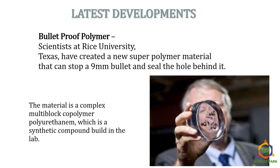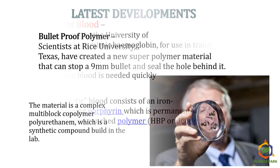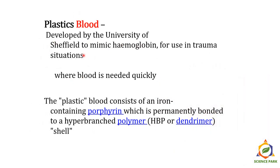Now let's see some latest developments in polymer and plastic research. As bulletproof polymers, scientists at Rice University in Texas have created a new super polymer material that can stop a 9mm bullet and seal the hole behind it. This material is a complex multi-block copolymer polyurethane, a synthetic compound built in a lab. Another development is plastic blood, developed by the University of Sheffield to mimic hemoglobin for use in trauma situations. It consists of an iron-containing porphyrin complex permanently bonded to a hyperbranched polymer called a dendrimer.